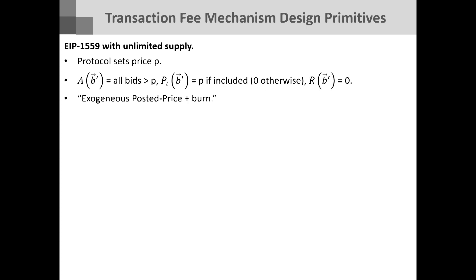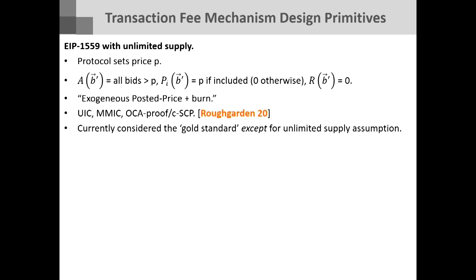Case study one: think of EIP-1559 with unlimited supply — anyone who wants to pay P can get in, you pay P, it's burned, the miner gets nothing. We said this is great because users should just bid their true value, miners get no revenue no matter what they do so they should participate honestly, and there are no collusions. This is my understanding of what is currently considered kind of the gold standard — except for the unlimited supply assumption, which is not realistic — but otherwise it satisfies everything we want.